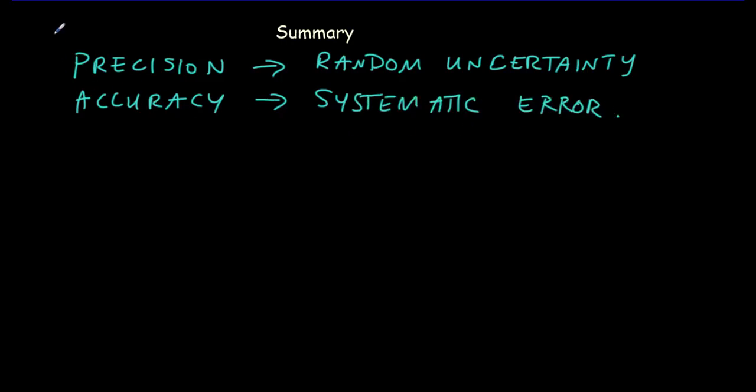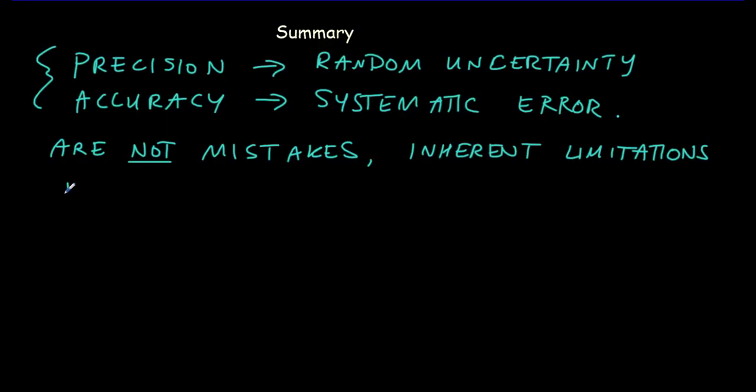Now take note, these are not mistakes. If you make a mistake in your lab, redo the measurements. What we're talking about here is these are inherent limitations to your measurements. It's part of the equipment that you're using. And all experiments have random uncertainty and systematic error. That's just part of the game. So don't complain about them and don't confuse them with mistakes.